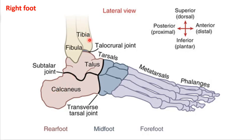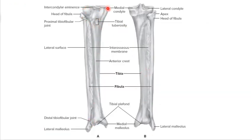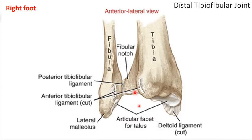You can see the calcaneus in the rearfoot and the tibia-fibula running all the way up. Unlike the knee where the fibula was not really part of the joint, down here the fibula is a big part of the ankle joint. You have the fibula on the lateral surface, the interosseous membrane, and the tibia on the medial side — quite a bit of bony material there, with not a lot of musculature on the medial side.